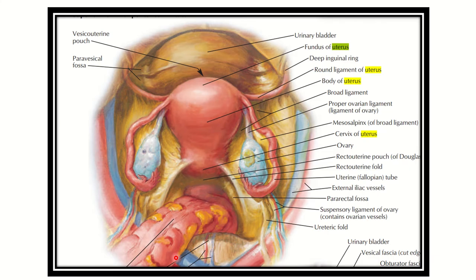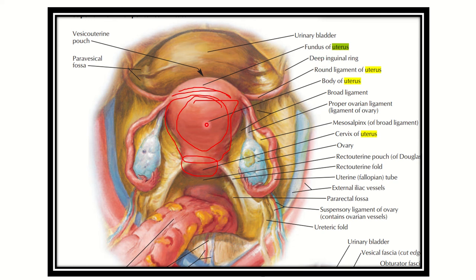Let's look at the different parts of the uterus. We can see the fundus in the upper part, then the body of the uterus in the middle, and in the lower part it is the cervix of the uterus. So the three main parts are: fundus, body, and cervix.